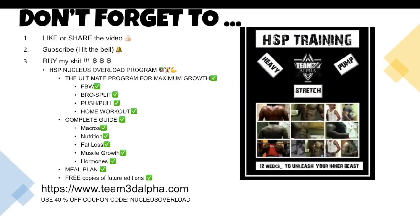All right, guys. Don't forget to like or share the video. Subscribe and hit the bell. And buy my HSP Nucleus Overload Training Program. It's the ultimate program for maximum muscle growth. It includes full body workouts, splits, bro splits, push-pull, home workouts, you name it. Also comes with a complete guide for macros, nutrition, fat loss, muscle growth, hormones, including a meal plan. It's pretty much all my 16 years of experience condensed into one book. You're also going to get free copies of any future edition. So visit team3dalpha.com and you can use the 40% off coupon code Nucleus Overload or you could just buy it at full price. All right, guys. I'm out of here.